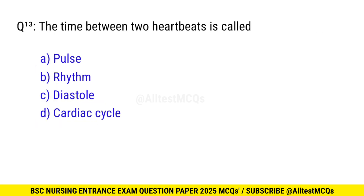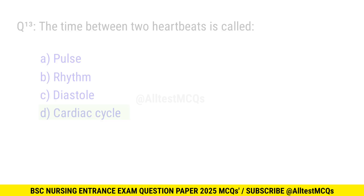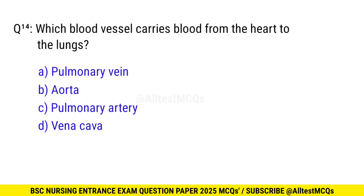Question No. 13: The time between two heartbeats is called? The correct option is D: Cardiac cycle. Question No. 14: Which blood vessel carries blood from the heart to the lungs? The correct option is C: Pulmonary artery.